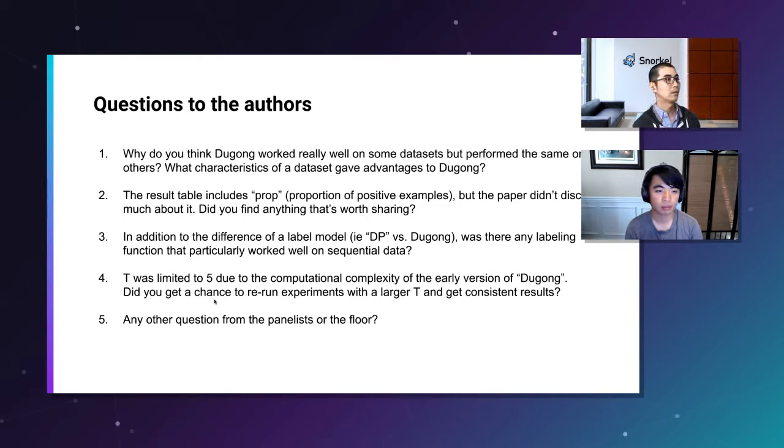Right. So we, Dugong actually doesn't run with T greater than five on a standard GPU. So we didn't do it with Dugong, but with Flying Squid, which is kind of the follow-up work. I think that the name of that paper is like Fast and Three Areas or some crazy title like that. We were able to get larger T. And in some cases that results in better performance. In other cases, the signal's kind of all there to begin with, so we didn't need necessarily larger T. But even T equals five, with Dugong, will take some GPU cycles just to run the label model. With Flying Squid, it was basically all CPU and ran super fast.